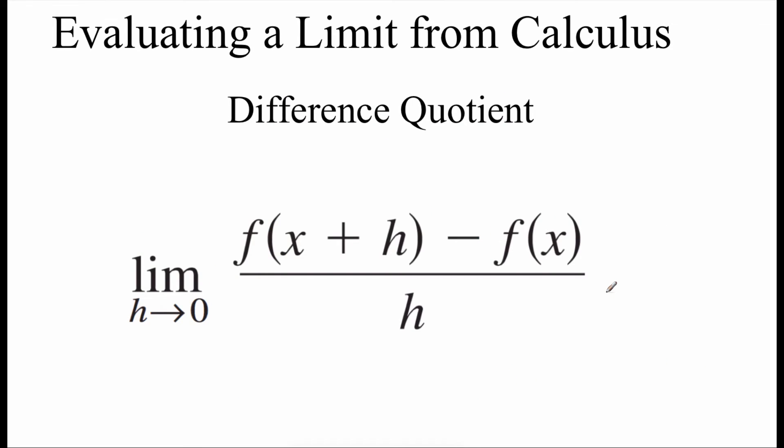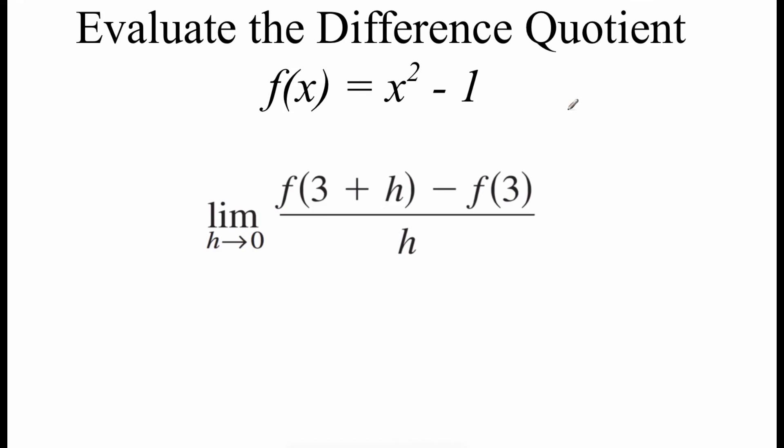In calculus limits will be very important. And one limit you'll see a lot is a limit of something called a difference quotient. So I've got a difference quotient shown here. It's f of x plus h minus f of x all over h. And the limit we're going to do is as h is approaching 0. So let's say for this difference quotient we were going to look at the function f of x equals x squared minus 1. Then what we want to do is the limit as h approaches 0 of f of 3 plus h minus f of 3 all over h. Now before we can actually do this limit, we need to look at this actual difference quotient stuff that's happening. So I'm focusing on this first piece right here where it says f of 3 plus h. What that means is in our function we need to replace our x with 3 plus h.